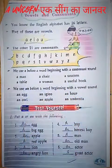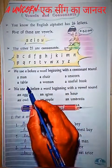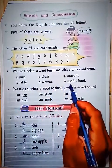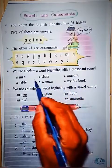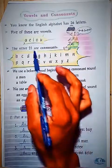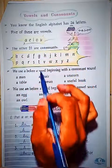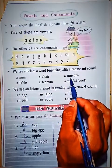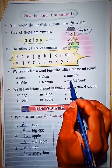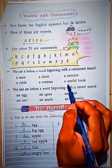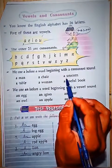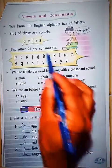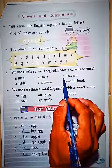A useful book — notice here. You might think 'u' is a vowel, so why is 'a' being used? But here the sound coming from 'useful' is a consonant sound — 'yu'. Similarly, 'unicorn' also starts with a consonant sound 'yu', so we say 'a unicorn', not 'an unicorn'. You need to look at the sound, not just the letter.